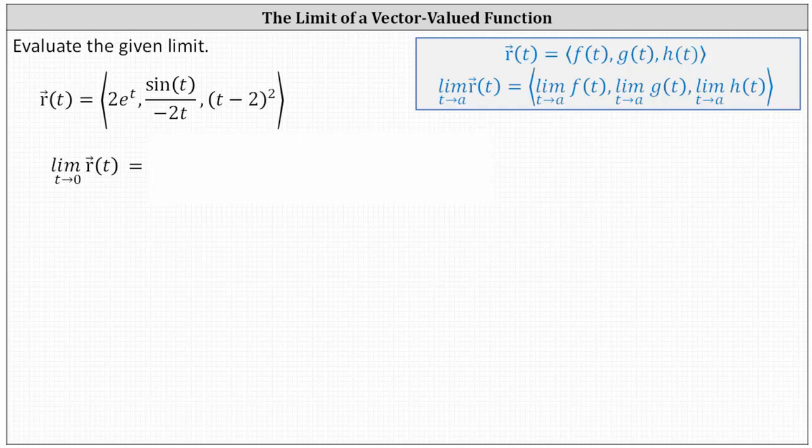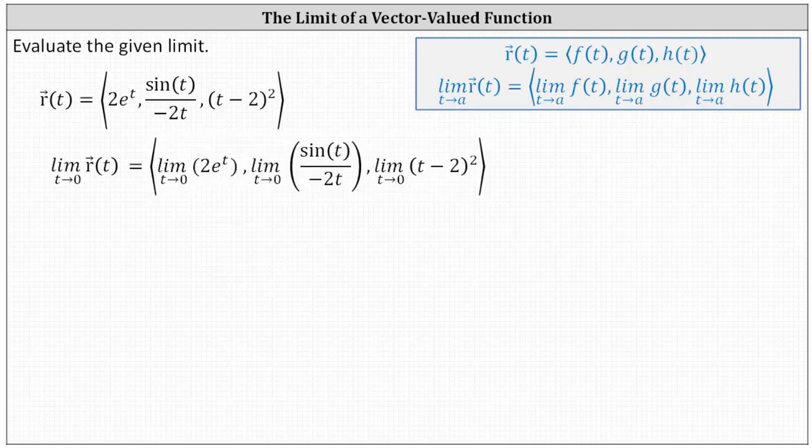Given the vector-valued function r of t, we want to determine the limit as t approaches zero of r of t. To do this, we need to determine the limit as t approaches zero of the x, y, and z components. Now we consider each of the three limits.